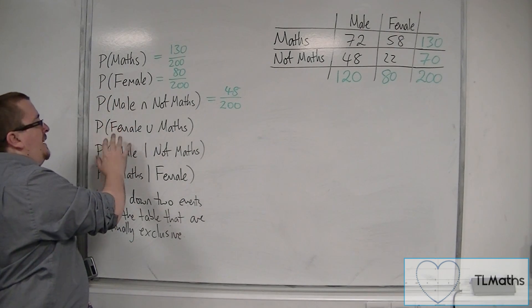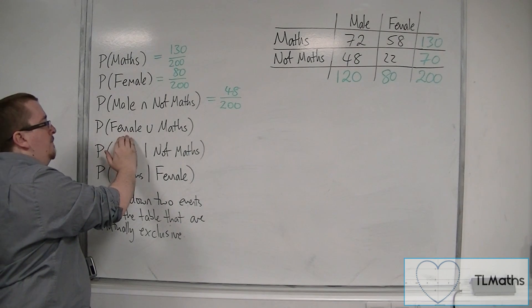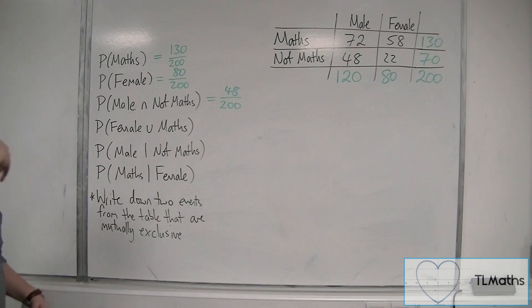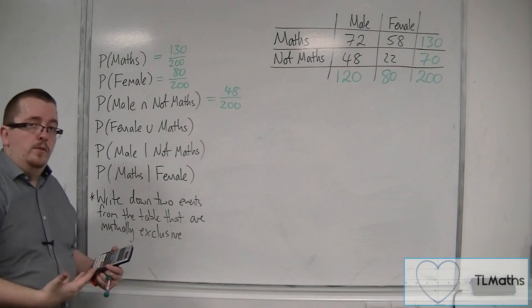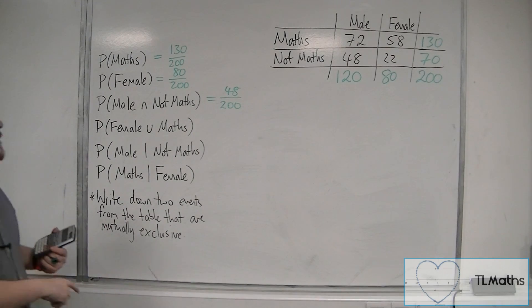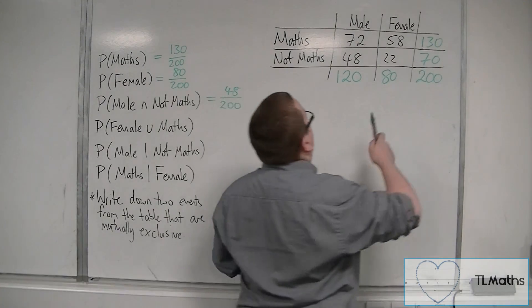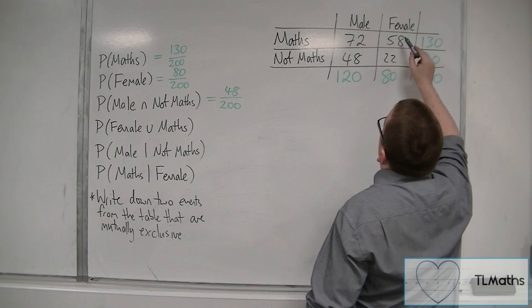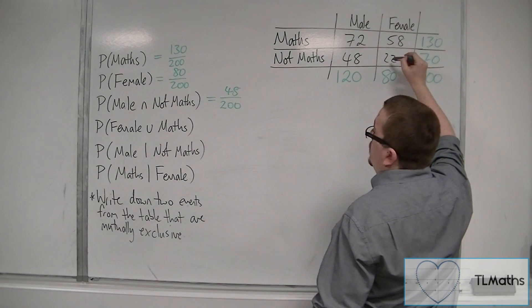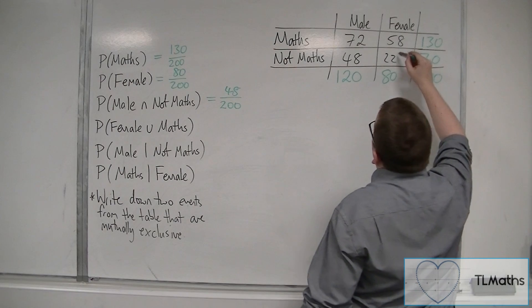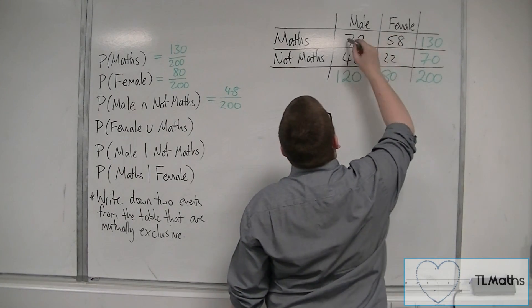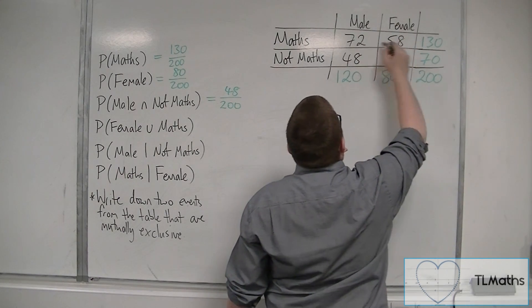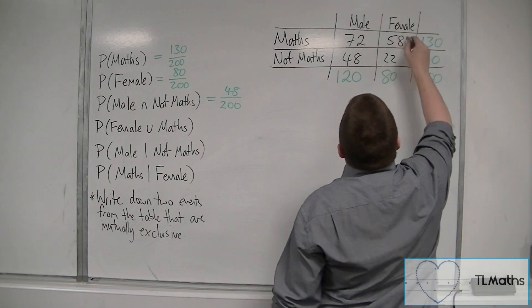How about selecting a student that is either female or studies maths or is both. So students that are female, so 58 and 22. Or they study maths, so those two. Or both. So female and maths.